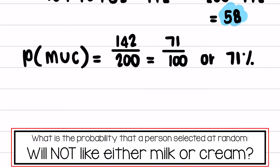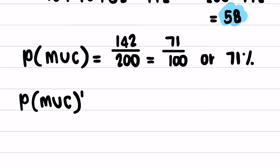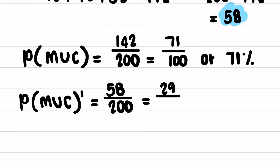The next question asks: what is the probability that a person chosen at random will not like either cream or milk? That probability covers the people outside the circles in the sample space. The probability of not milk or cream equals 58 out of 200, which simplifies to 29 over 100, or 29 percent.